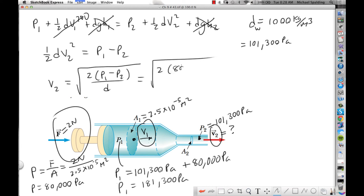So that works out to be 2 times 80,000, right? The difference between, so we go P, so here's P1. P1 minus P2 is 80,000.